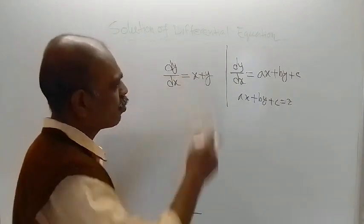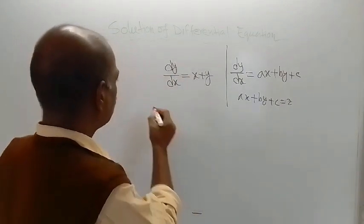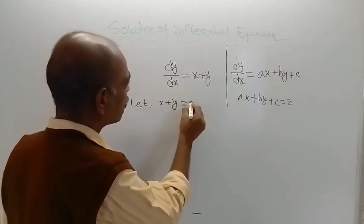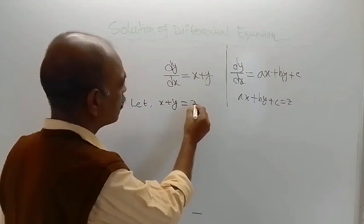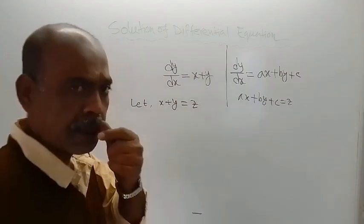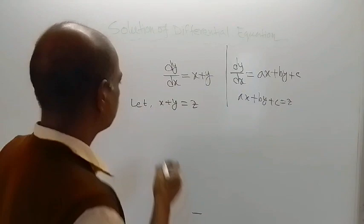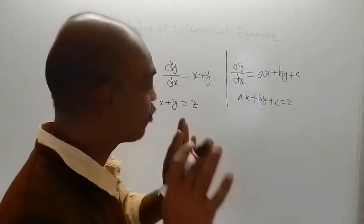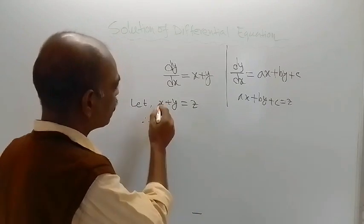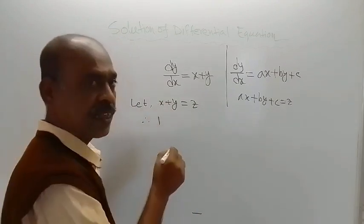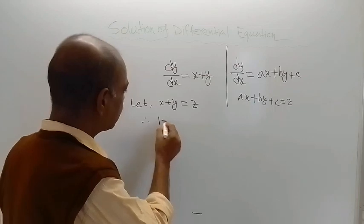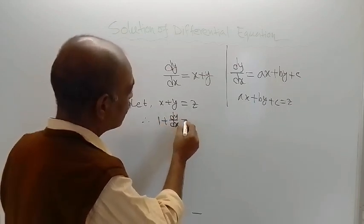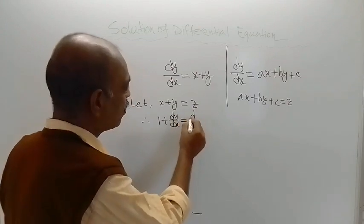Here also we are going to do the same thing. So let x plus y be equal to z. Now differentiate both sides with respect to x. For the first term x, we get 1. d/dx of x equals 1, d/dx of y equals dy/dx, and d/dx of z equals dz/dx.